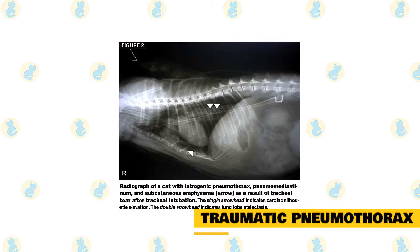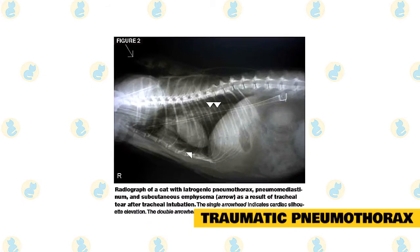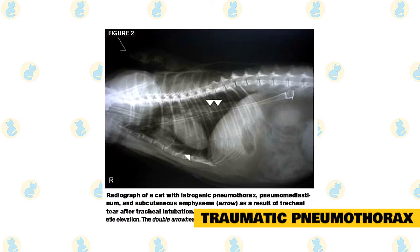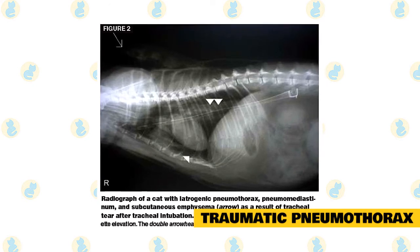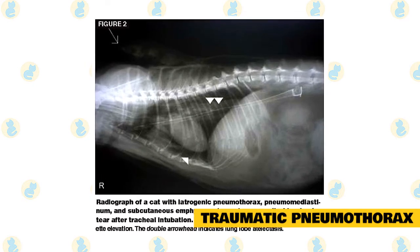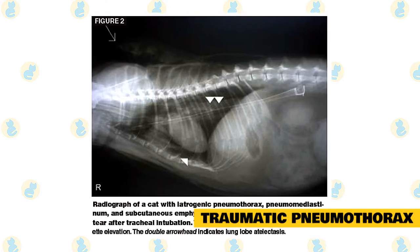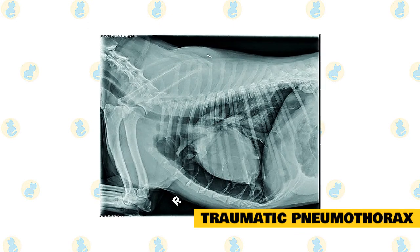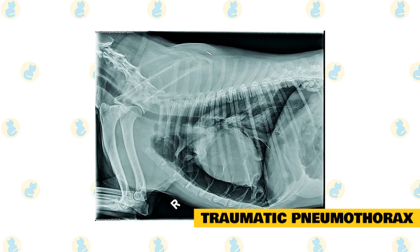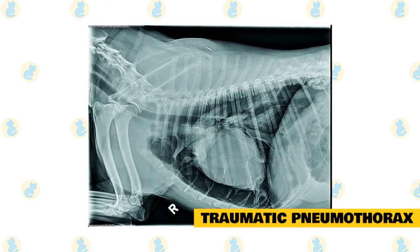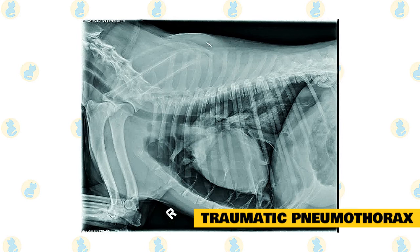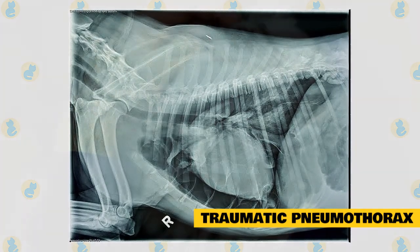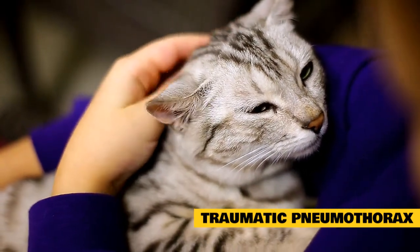In a traumatic pneumothorax, air accumulates between the lungs and chest wall following some type of trauma, such as a severe dog bite. Because there is no opening in the chest wall, this is considered a closed pneumothorax. However, if there is enough damage to the chest wall to create a defect, this is called an open pneumothorax, where there is communication between the chest cavity and the outside atmosphere. Another possibility is a one-way air transfer from inside to outside the lung, where air cannot be exhaled and becomes trapped within the chest cavity.